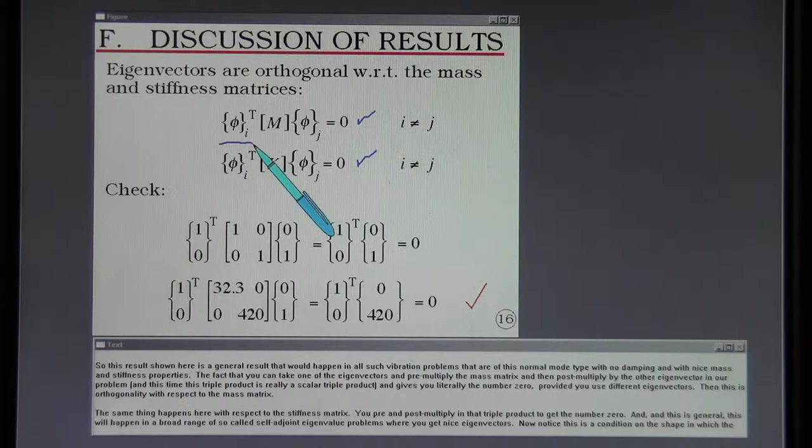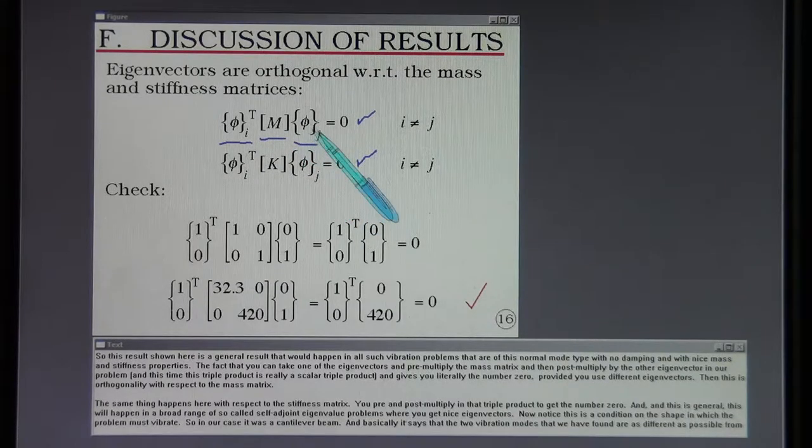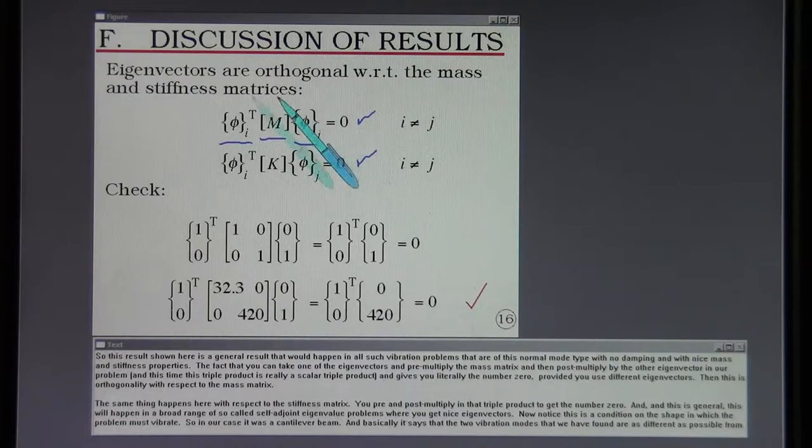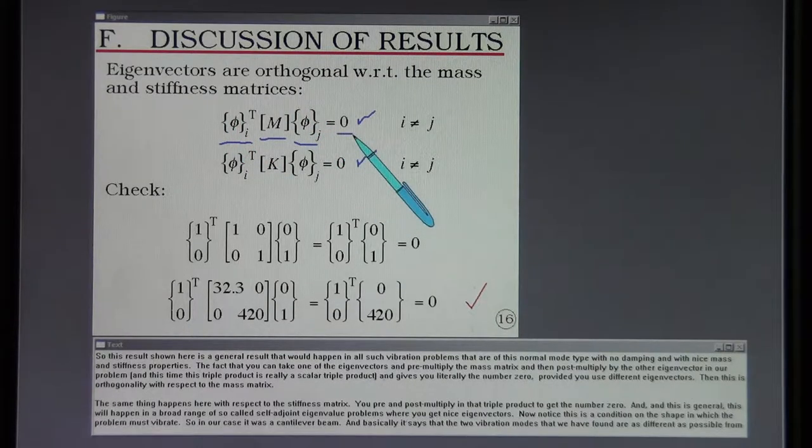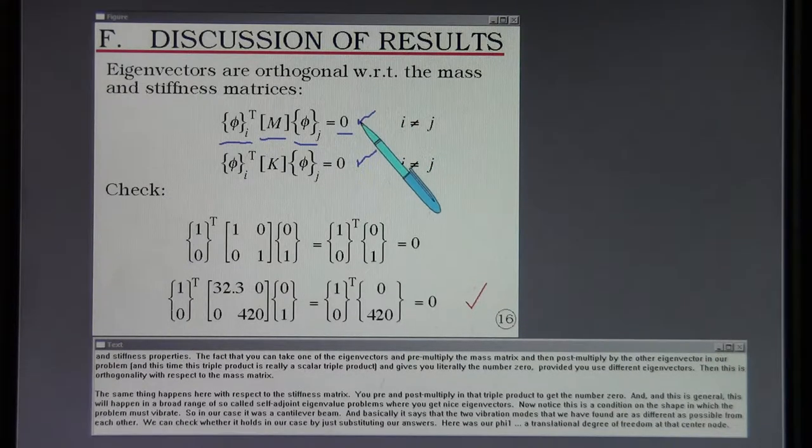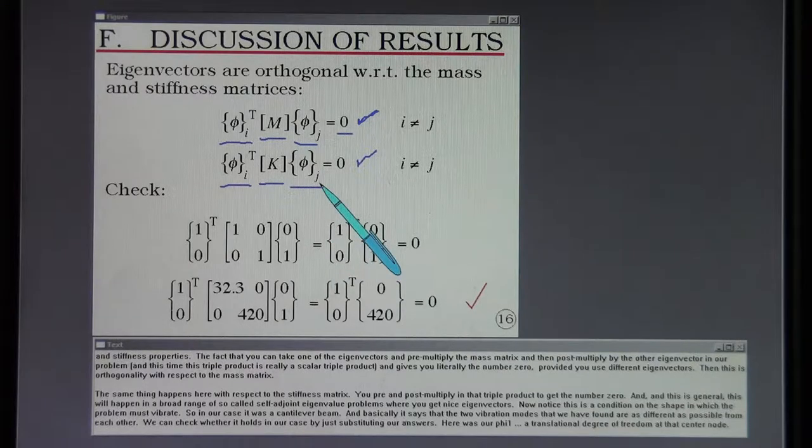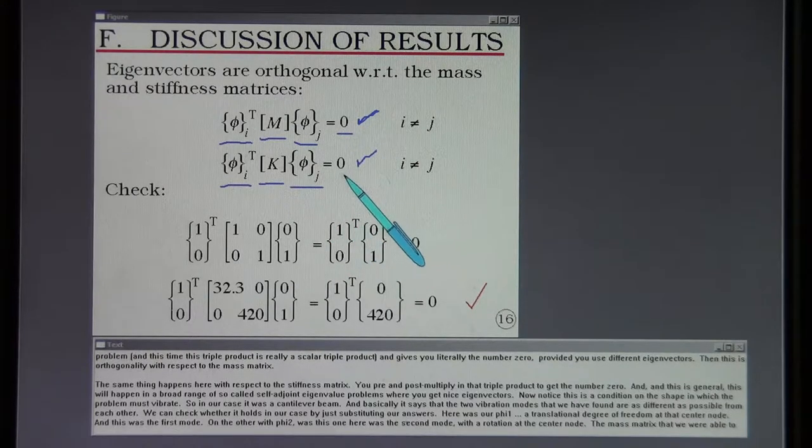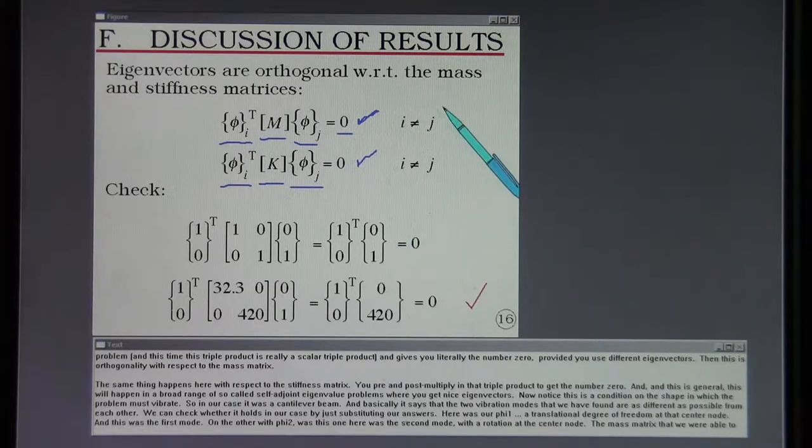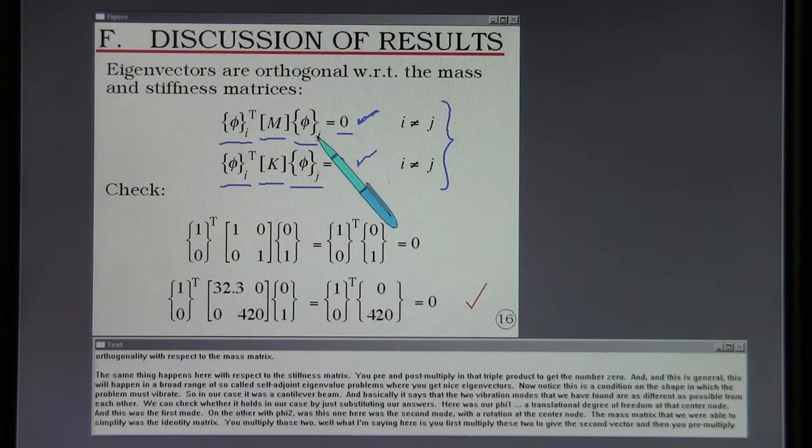The fact that you could take one of the eigenvectors and pre-multiply the mass matrix and then post-multiply by the other eigenvector in our problem, this triple product gives you literally the number zero provided you use different eigenvectors. This is orthogonality with respect to the mass matrix. The same thing happens with respect to the stiffness matrix. You pre- and post-multiply in that triple product you get the number zero. And this is general.